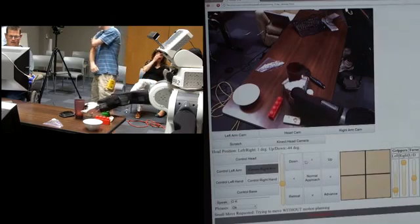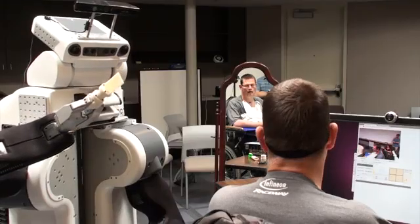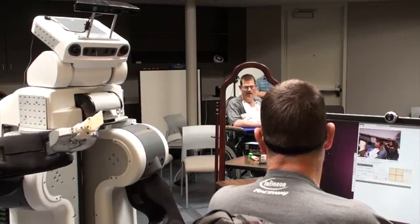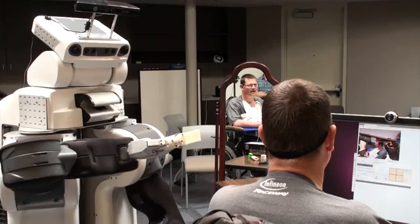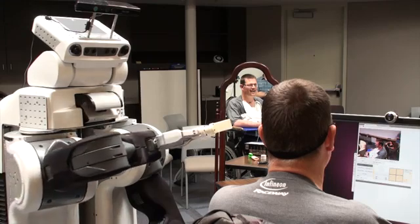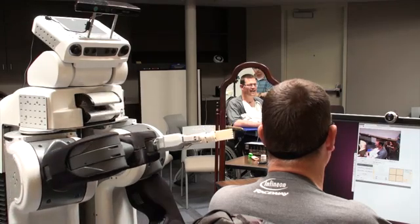It is extremely important for Henry to be able to do things for himself, both for practical reasons but also so that he is in control of his own world. Even simple tasks such as scratching an itch are important. Henry estimates that two or three times an hour he gets an itch that he cannot scratch himself.